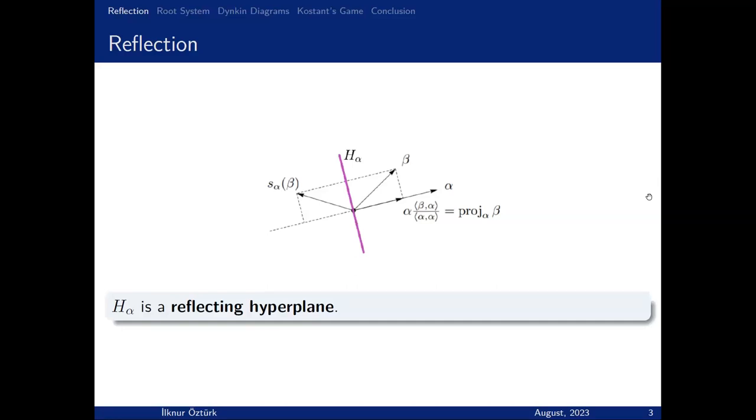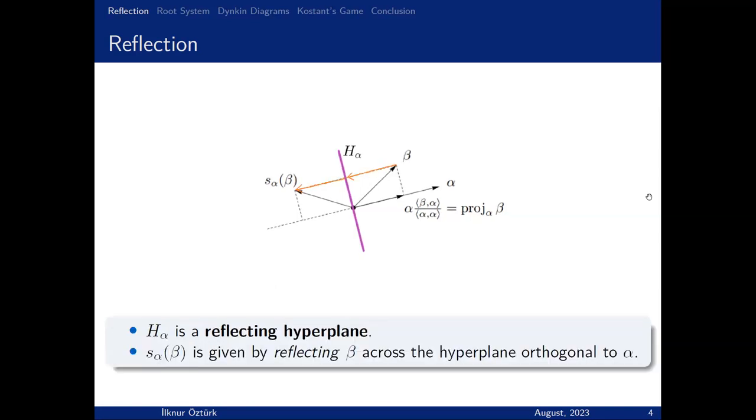Let's start with reflection. You can see some vectors. Our aim is to reflect beta with respect to H_alpha. H_alpha is our reflective hyperplane, which has a normal vector alpha. S_alpha(beta) is our reflection.